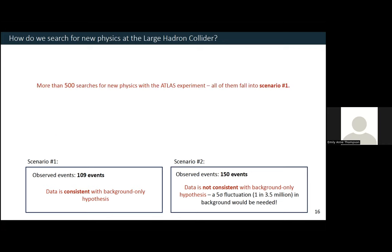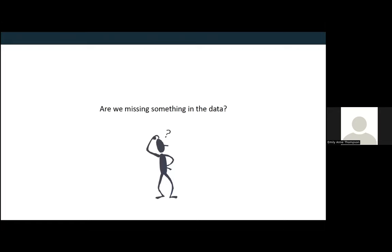That's the basics of how to search for new physics. Since the LHC was turned on, in ATLAS alone we've published about 500 searches for new physics, and every single one of them has fallen into scenario one — all the data we've looked at so far is highly consistent with what the standard model predicts. This got me thinking: are we perhaps missing something in our dataset? Is there perhaps some signal of new physics right in front of us that we just haven't figured out how to search for yet? This became really the focus of my PhD research.